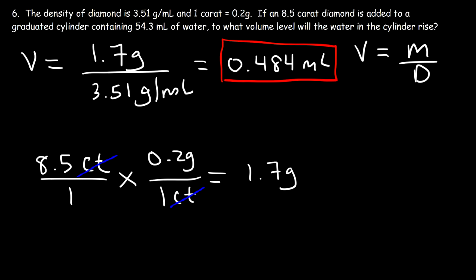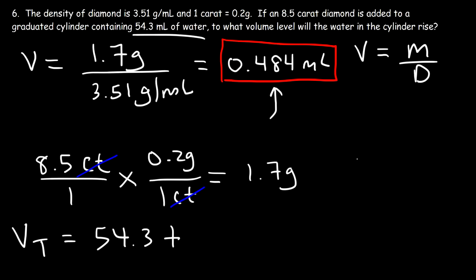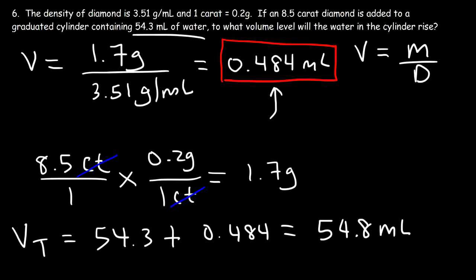Now that we have the volume, we can find the new volume level of the water in the cylinder. The total volume is the original water volume of 54.3 plus the increase due to the diamond, which is 0.484. So 54.3 plus 0.484 is about 54.8 milliliters. That's the new volume level once the diamond has been added to the graduated cylinder.